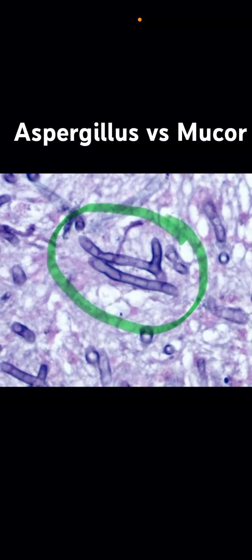We're going to talk about fungal hyphae. The first one I want to show you has narrow-angle branching and septa within the hyphae, shown within the green circle. This kind of morphology in the lung usually represents Aspergillus, but not always.